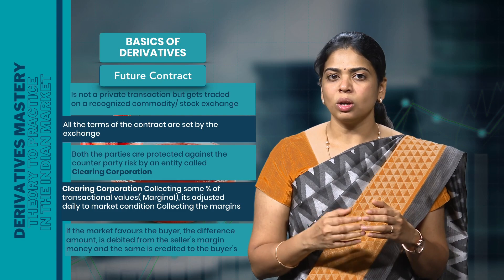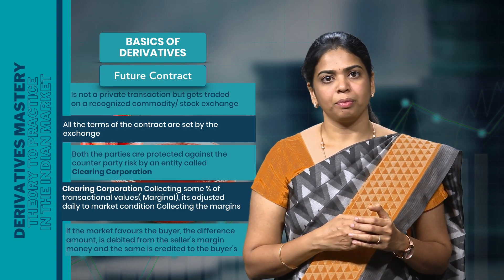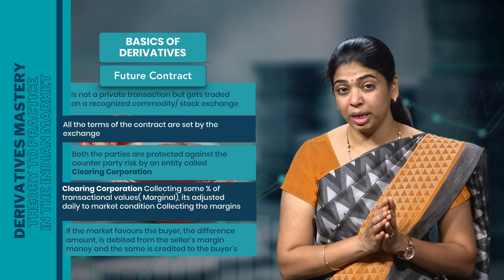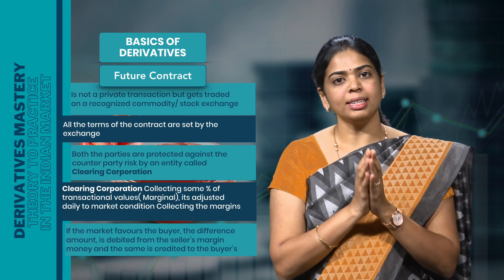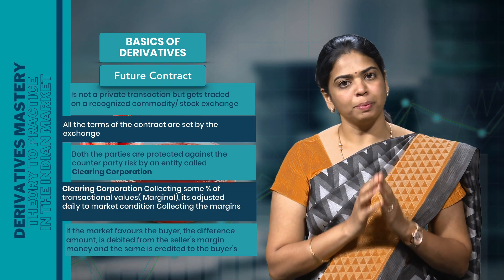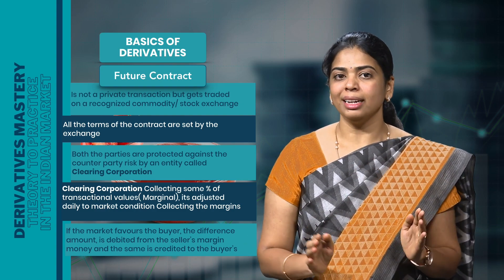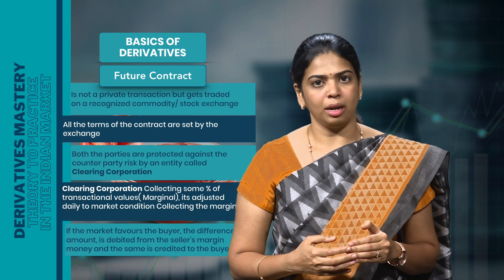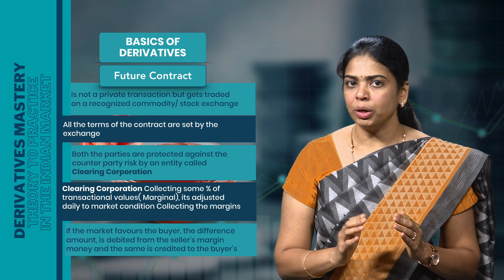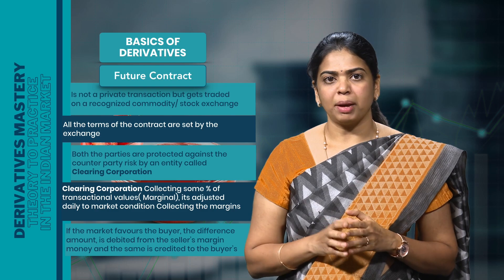We shall discuss this concept in depth by solving numericals in the upcoming videos. Also, the futures contract entered through the exchange provides liquidity — any time, the parties involved can either book their profits or losses and square off their positions midway. Their position would be automatically replaced by another participant in the market. The transaction continues by another person and has not come to an end; this would continue till the date of expiry.